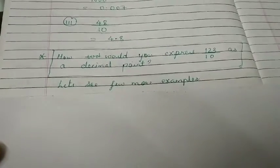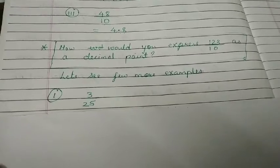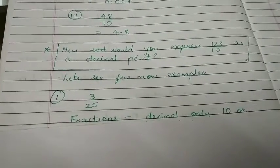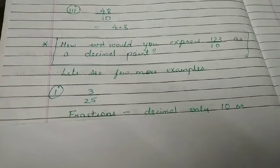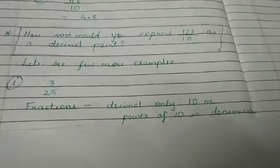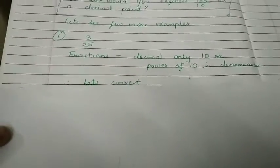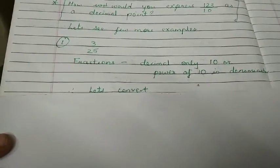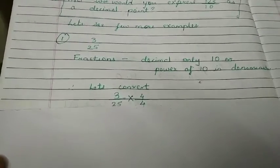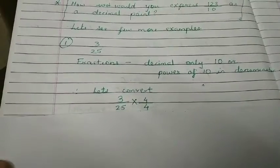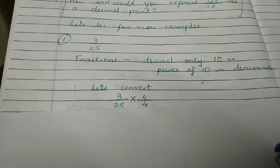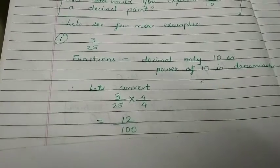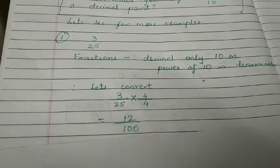Now, let's see a few more examples. Now, we have 3 upon 25. How are we going to solve this? As we have learned only the fractions or we can say the decimals which have denominator as 10 or power of 10 in denominators. So, let's convert the denominator 25 into the 10 or power of 10. How can we do this? It's very easy. Just multiply the number 25 by 4. As we are multiplying to denominator, we need to multiply for numerator also. So, we will have 12 upon 100 as 3 times 4 is 12 and 25 times 4 is 100.